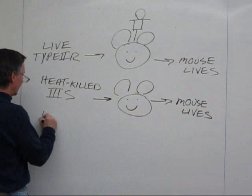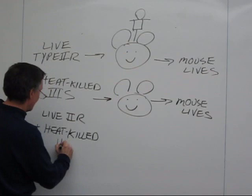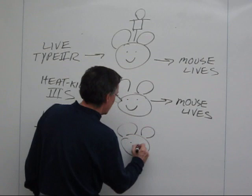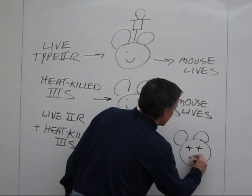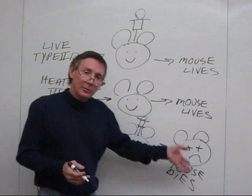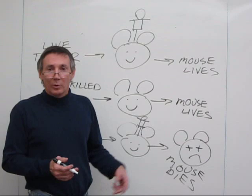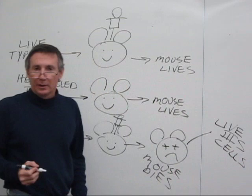But what happens if you mix the two? Take live 2R cells and heat-killed 3S cells, inject those into a mouse. In this case, the mouse dies. Not only does the mouse die, but if you then extract blood from the mouse and culture cells from it, what you find in that mouse are live 3S cells.